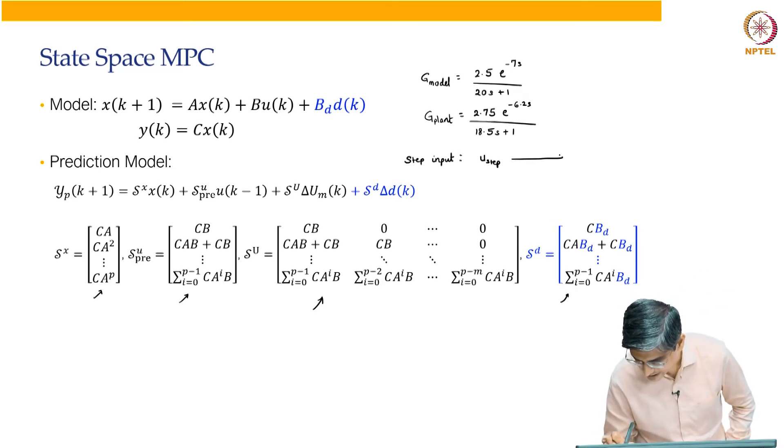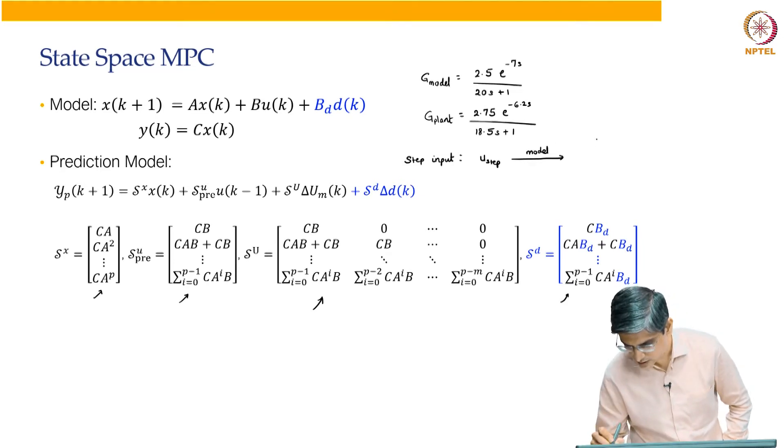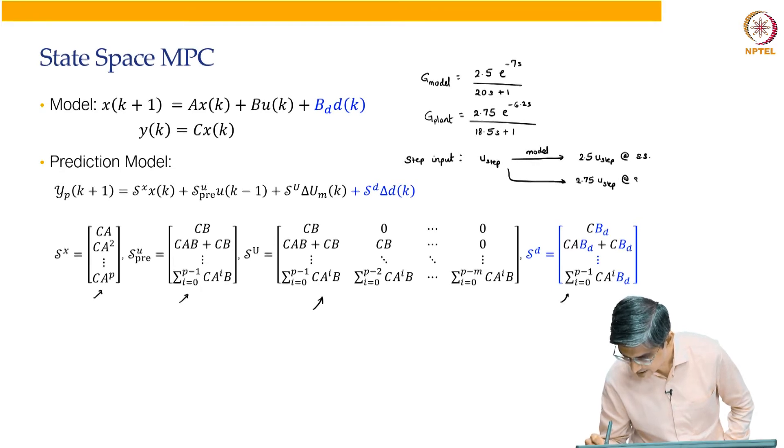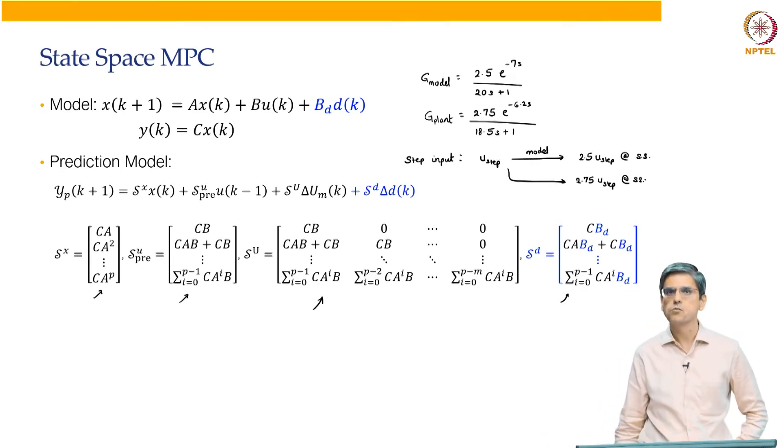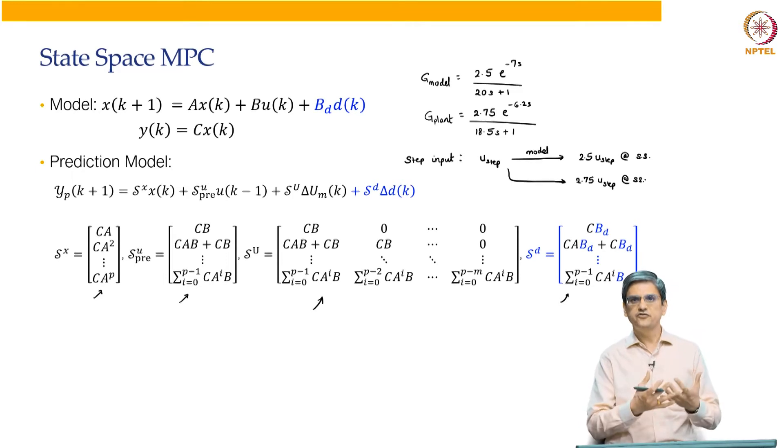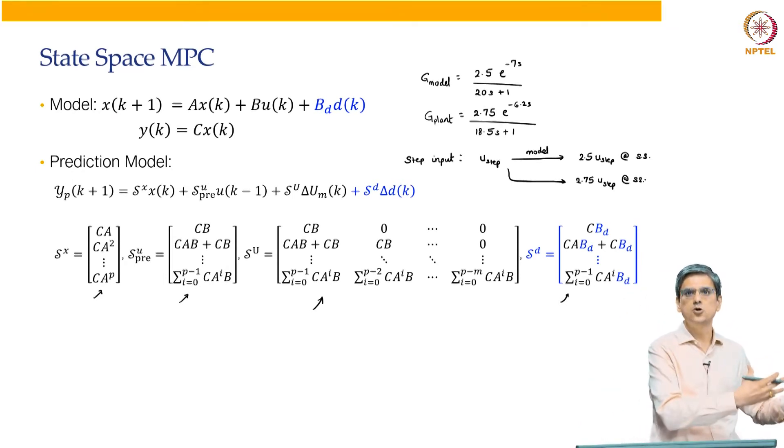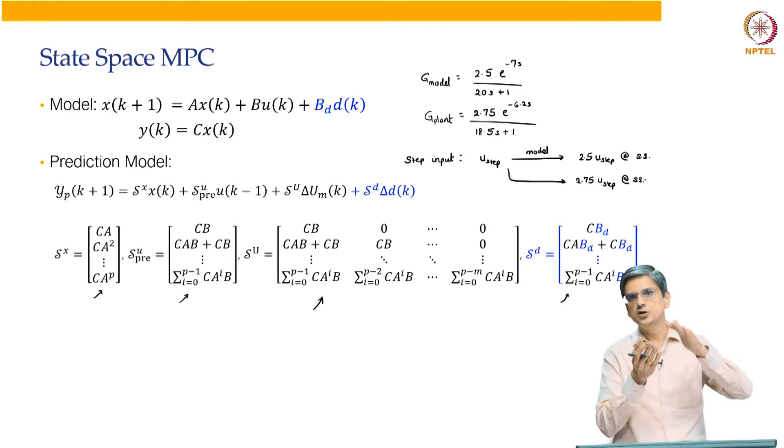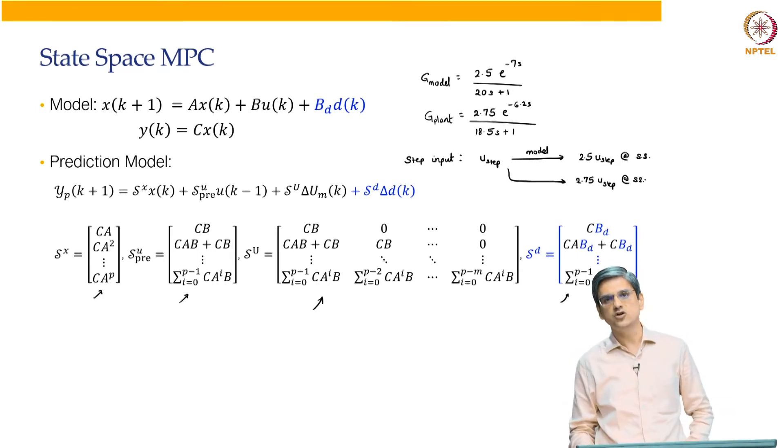And the true system was 2.75 e to the power minus 6.2s divided by 18.5s plus 1. Your model will predict your output to be 2.5 multiplied by U step at steady state. Whereas, your actual system is going to reach 2.75 multiplied by U step at steady state. So, if you blindly believe in the model and you do not do any type of correction, you are going to have that small amount of offset.